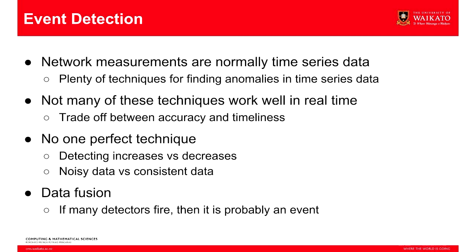On event detection: it's all time series data, which is fairly well understood for event detection, but not necessarily running in real time or with the sort of data we've got. Lots of techniques detect events over a long time period — they're less accurate over short periods, and it's no use finding events three days after they happen. So there's a trade-off: we run some aggressive short-term detectors, some longer-term ones, manage them all together, and use data fusion techniques to combine results from multiple detectors to determine whether an event has occurred.